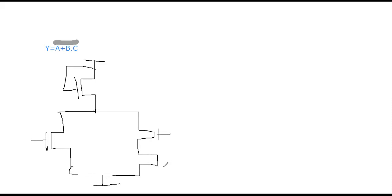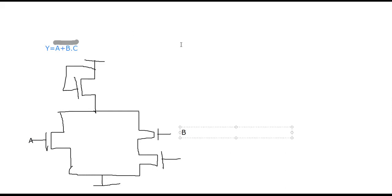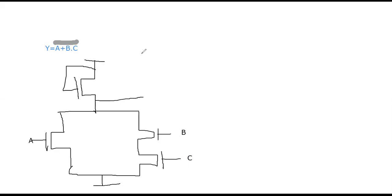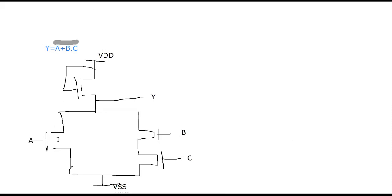Here we label one transistor as A, one as B, and one as C. The output is taken as y. You can see the A is in parallel with B, and the series connection is shown. A is parallel with B, and the BC end is here in series connection.